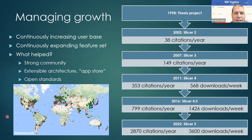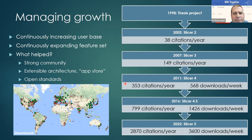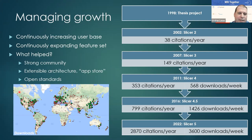Another challenge is managing growth. Our user base is growing with an exponential curve, roughly doubling every three or four years in most metrics. More users want more features and use them in new ways. Slicer downloads are spread worldwide, used in all countries. What helps manage this growth is a strong community, a good architecture, and using open standards.